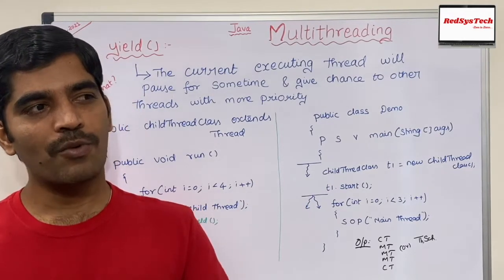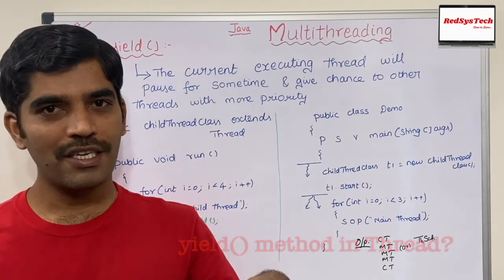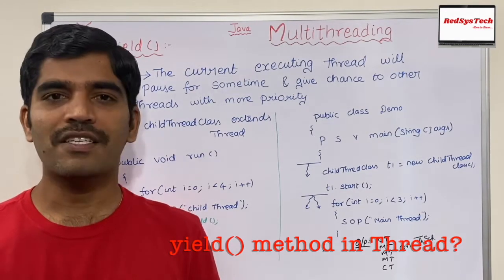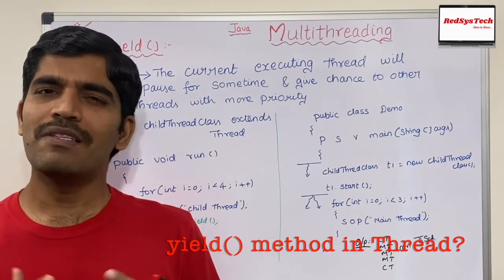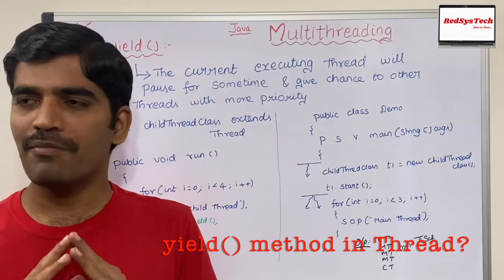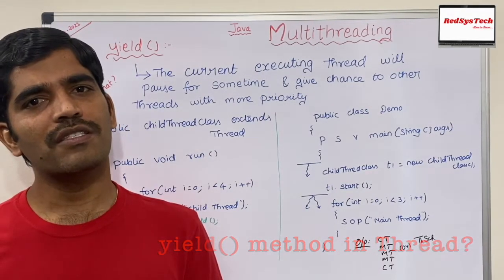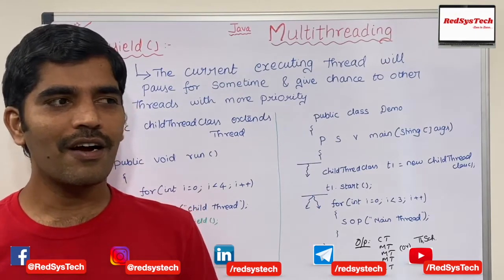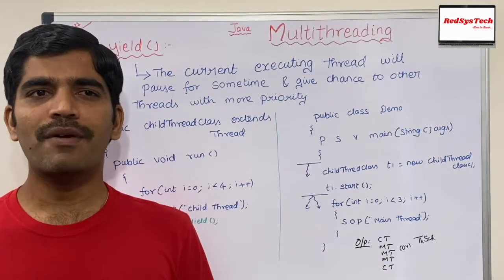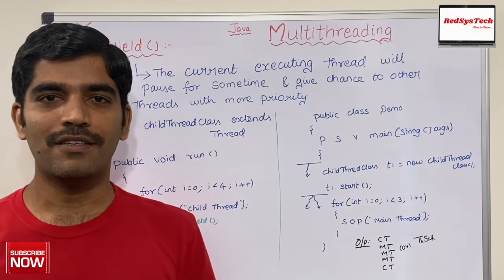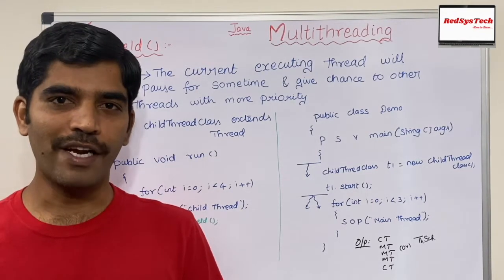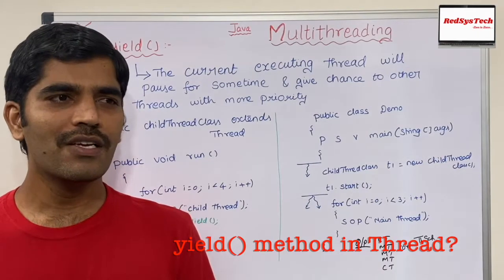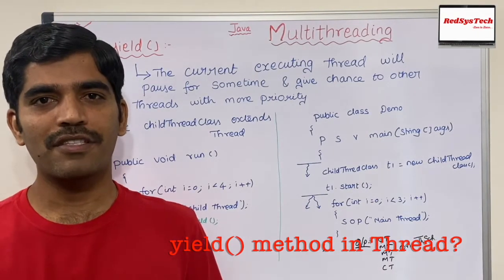There is only one counter open. You are standing in line and you see that one person is already before you, talking to the cashier about something else without making any real transaction. You wait five, ten minutes and you don't have any clue whether this person is doing a real transaction or just talking unnecessarily, so you might call the store manager.